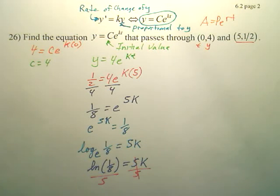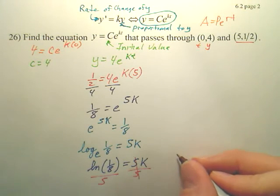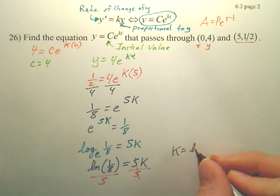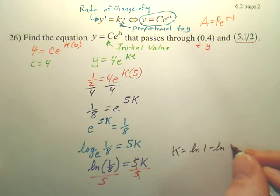But there's actually a little bit more simplification you could do. I think the book leaves it like this. But watch this, I'm going to do a little bit more simplification. What is division in terms of natural logs? It's a minus. So I'm going to write this as k equals ln(1) minus ln(8).